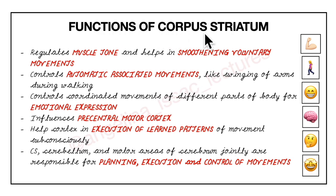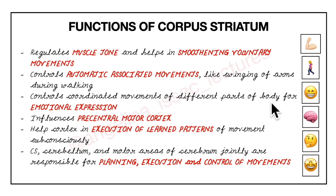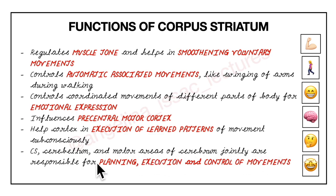Now let's learn about the functions of the corpus striatum. It regulates muscle tone and helps in smoothening voluntary movements. It controls automatic associated movements like swinging of our arms during walking. It controls coordinated movements of different parts of our body for emotional expression. It influences the precentral motor cortex. It helps our cortex in execution of learned patterns of movement subconsciously. The corpus striatum, the cerebellum, and the motor areas of the cerebrum jointly are responsible for planning, execution, and control of movements.